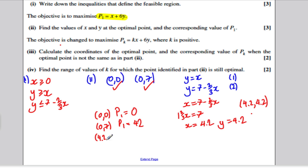And for 4.2, 4.2, P1 is equal to 6 times 4.2 plus 4.2, which is 29.4. So what's the value of X and Y at the optimum? Optimum is at, clearly, 0,7, and value P1 is 42, clearly at that point. So we've done part 1 and part 2.